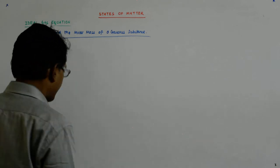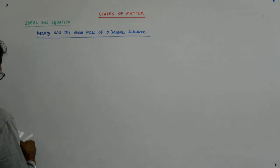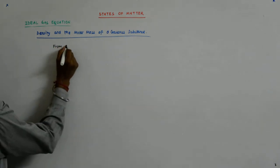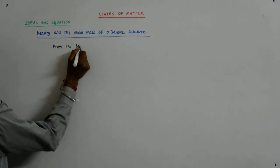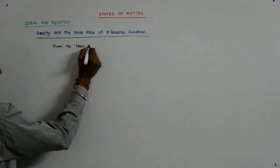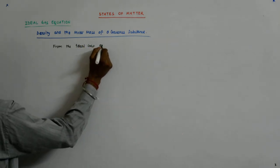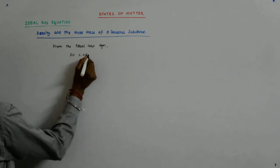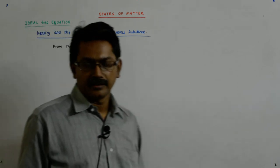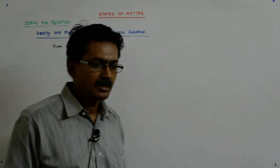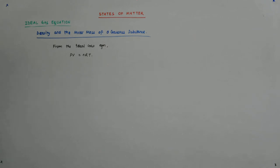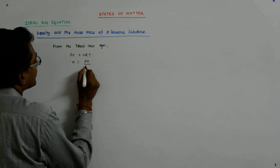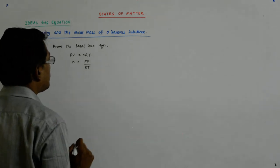Now we have this equation as the ideal gas equation. From the ideal gas equation, we have PV is equal to nRT. So n is equal to PV upon RT.